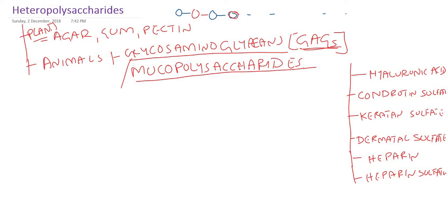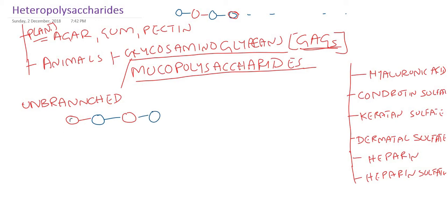Let me explain the structure of glycosaminoglycans. These glycosaminoglycans or mucopolysaccharides are unbranched. Heteropolysaccharides can be branched or unbranched, but especially these glycosaminoglycans are unbranched and they are repeating disaccharides. For example, suppose this is glucose, this will be galactose — glucose, galactose — this will be a linear unbranched polymer of repeating disaccharides.